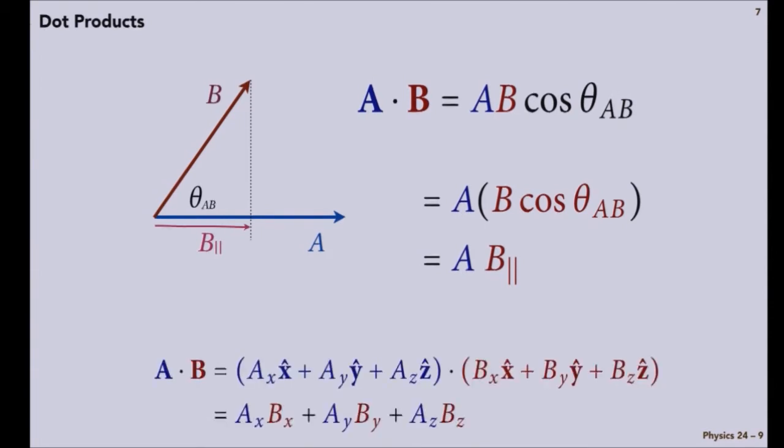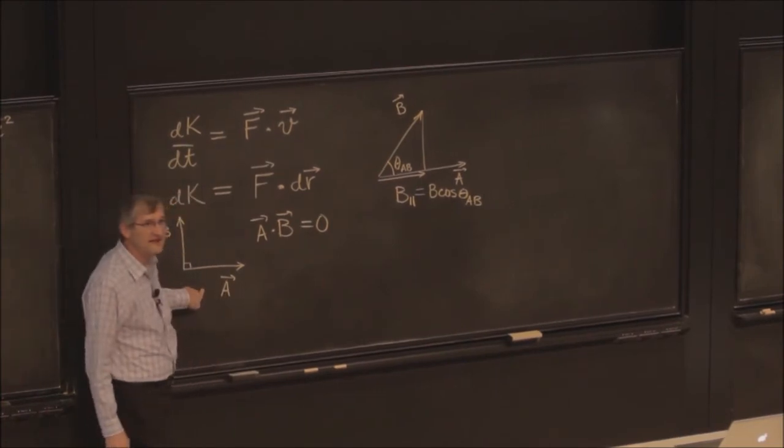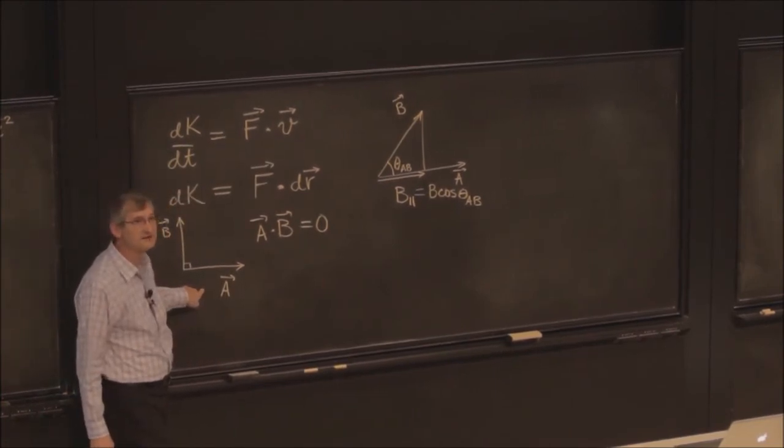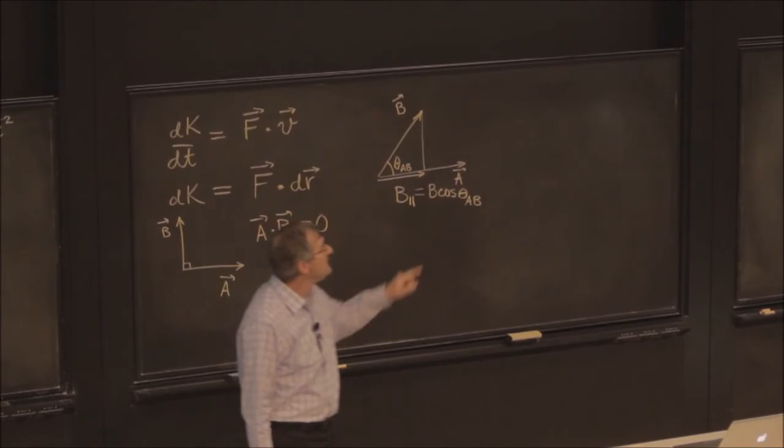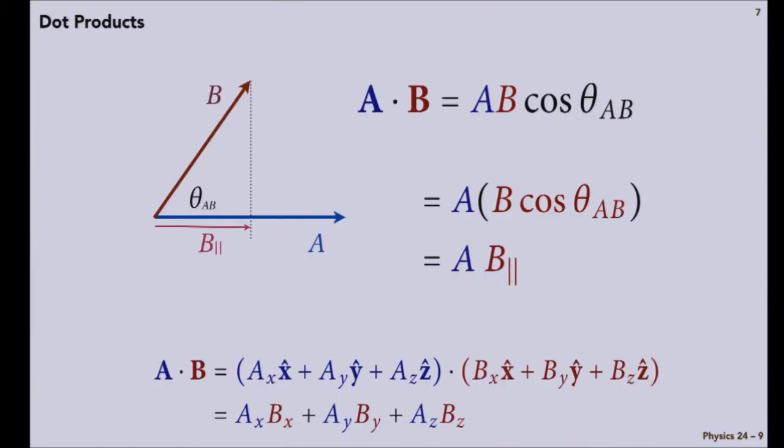And if I were to take a general vector a expressed in its components, a_x x unit vector, plus a_y, and so on, and take the dot product, if I use the fact that perpendicular vectors have a dot product of zero,